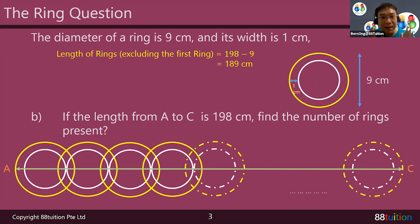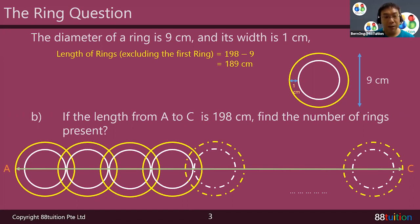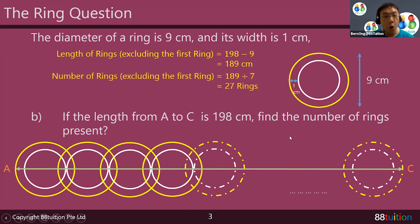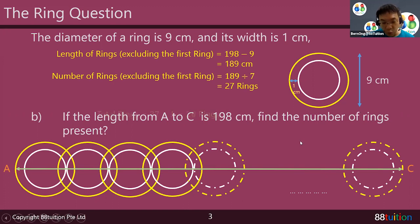This 189 centimeters is the total length of the remaining rings, excluding the first ring. Because of the overlap, each remaining ring is seven centimeters. So inside 189, how many sevens are there? There are 27. That means there are 27 rings that are overlapped. But remember to add back the very first ring, which was counted as nine centimeters — the full ring. So 27 plus 1 equals 28 rings. For Part B, the number of rings present is 28.